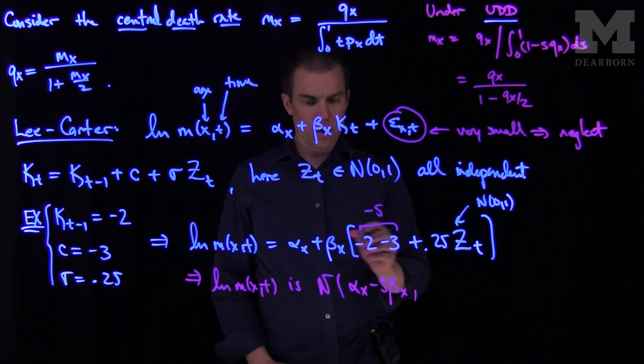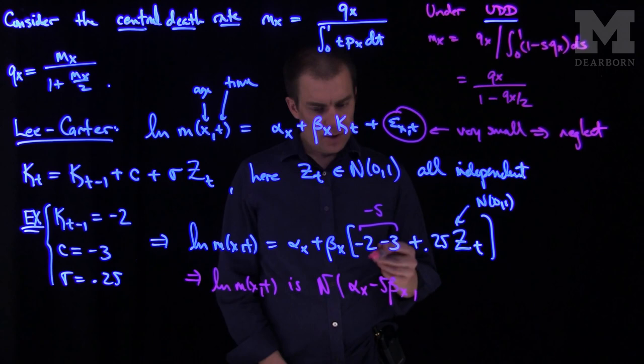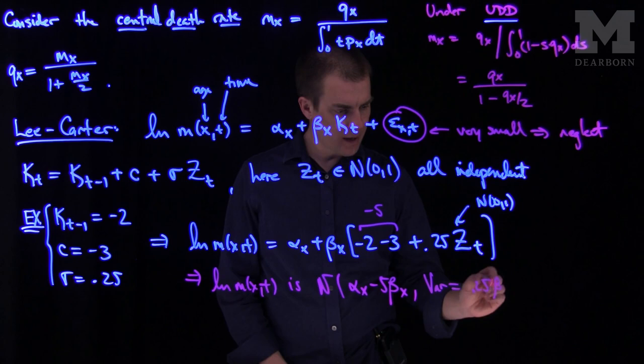And then what is the variance of this normal random variable? Well, over here we have a beta x and a 0.25. That's the coefficient of z. So the variance will be 0.25 beta x squared.